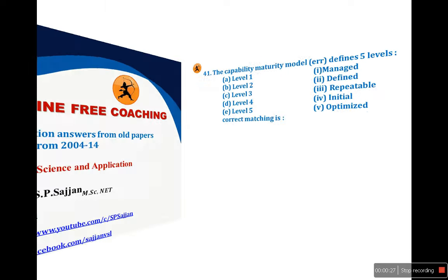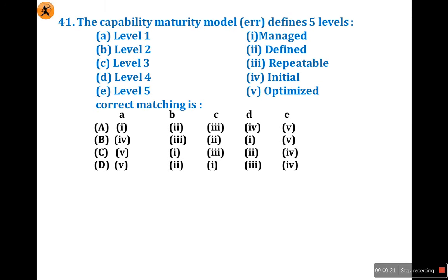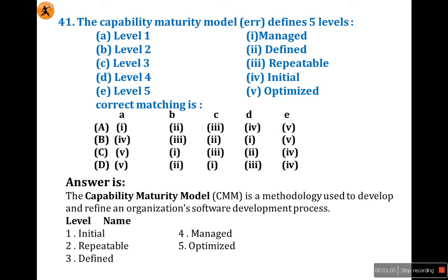I will start with question 41. The capability maturity model defines 5 levels. Actually, you know, capability maturity model defines 5 levels. All 5 levels are in the first part — first given levels — and in the second part all types are given. Now we need to match the following. First of all we need to understand what is capability maturity model. It is a methodology used to develop and refine an organization's software development process. In this process, 5 levels are used.